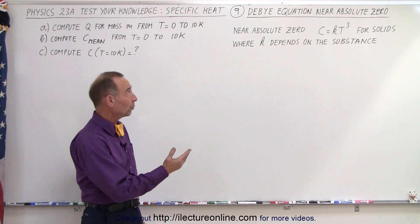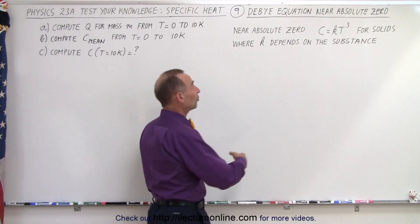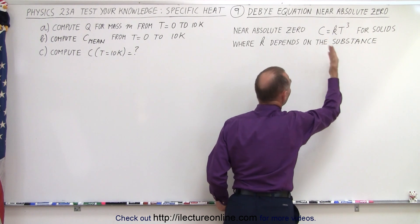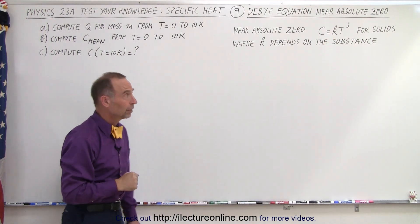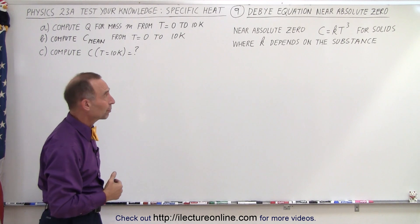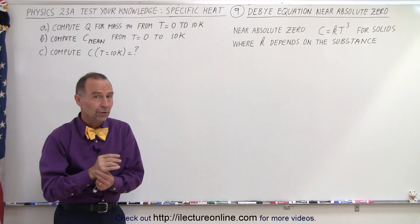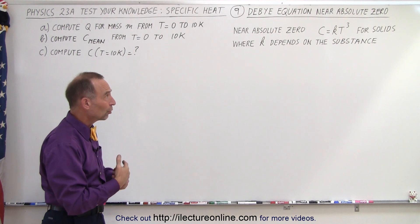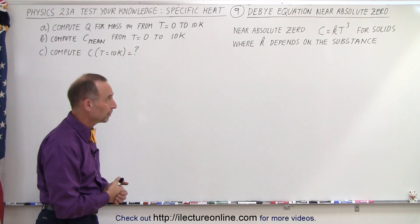It turns out, we can look at the Debye equation, and near absolute zero the specific heat is more like K — a constant — times T cubed. So it varies tremendously with temperature, which means that C near absolute zero becomes very, very small. K, of course, is a constant that depends on the substance we're dealing with.